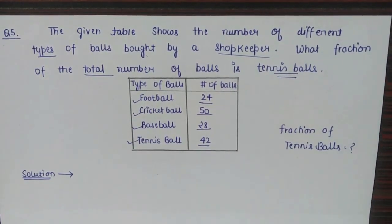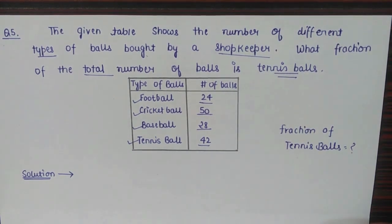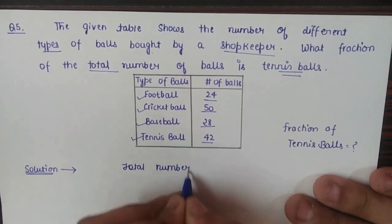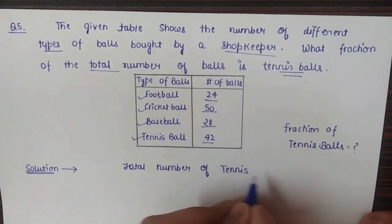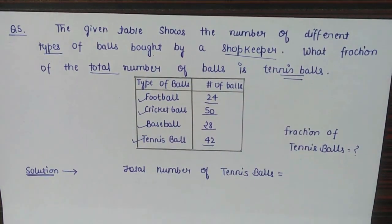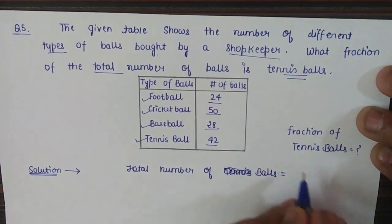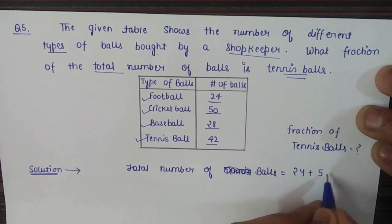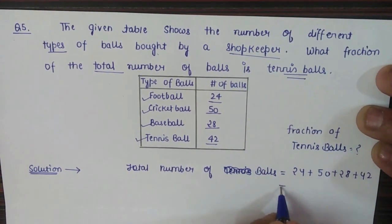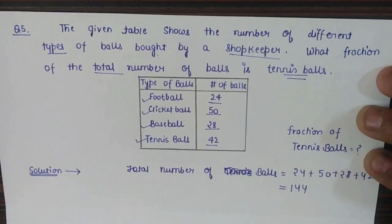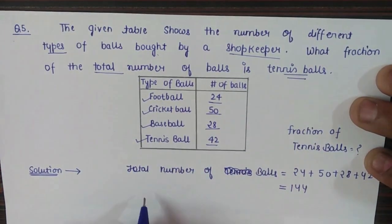Since a fraction is a part of a whole, we first need to calculate the total number of balls. The total is 24 plus 50 plus 28 plus 42, which equals 144.